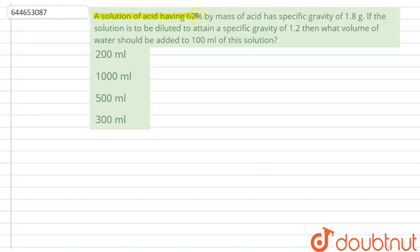The question given here is: a solution of acid having 62 percent by mass of acid has a specific gravity of 1.8. If the solution is to be diluted to attain a specific gravity of 1.2, what volume of water should be added to 100 ml of the solution? The options are 200 ml, 1000 ml, 500 ml, or 300 ml.